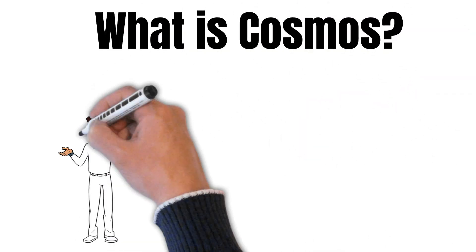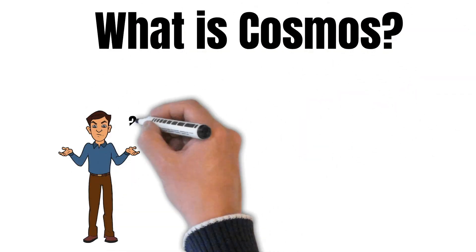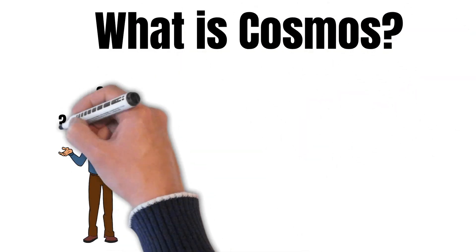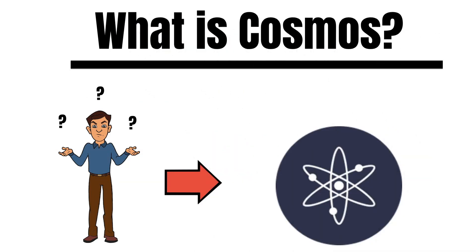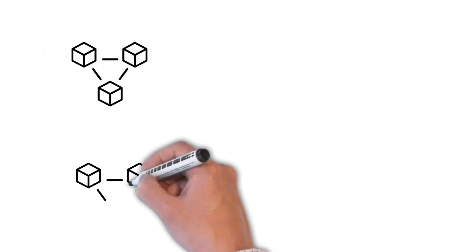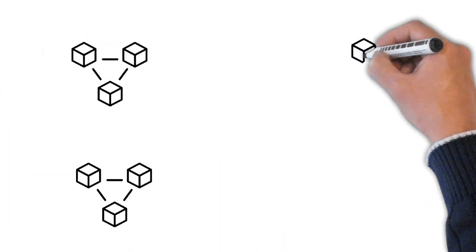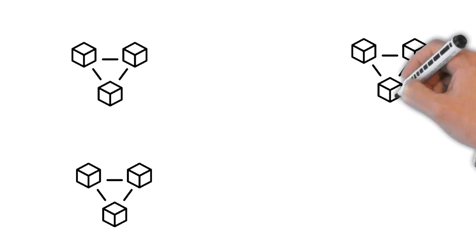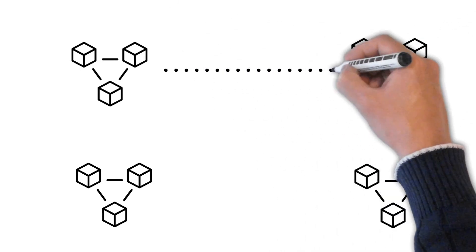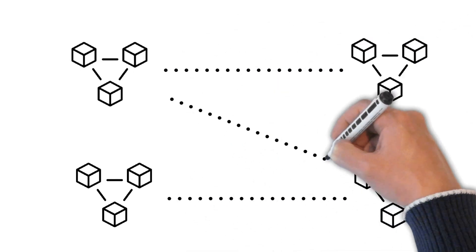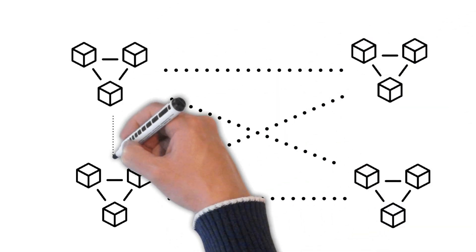What is Cosmos? This is what I will explain to you in today's episode. The Cosmos ecosystem is a network of many different blockchains. The vision of Cosmos is to create the internet of blockchains, where each blockchain is connected to another one using a standardized communication protocol.